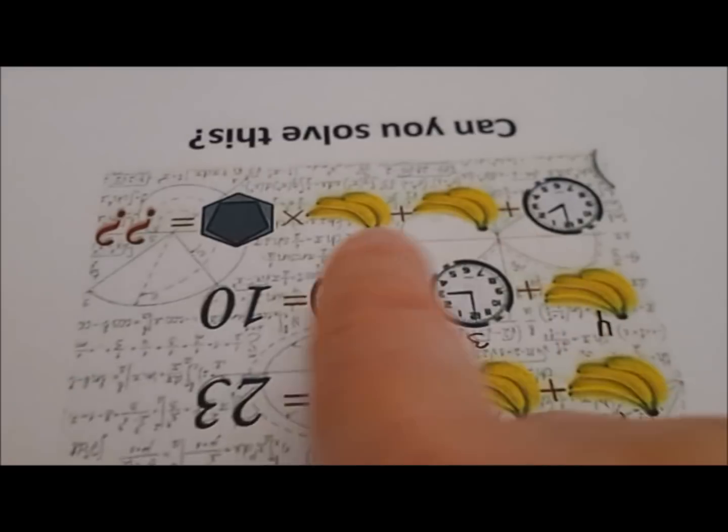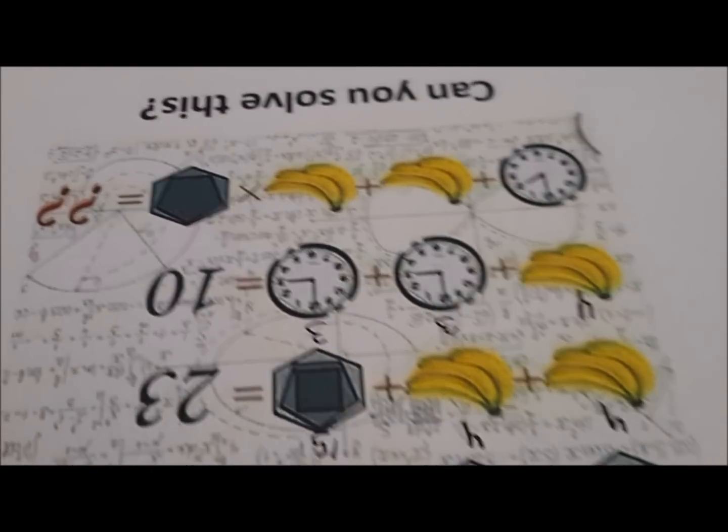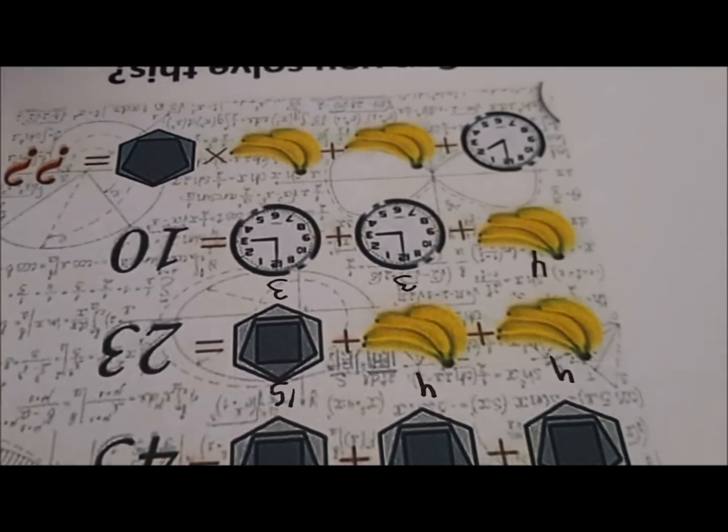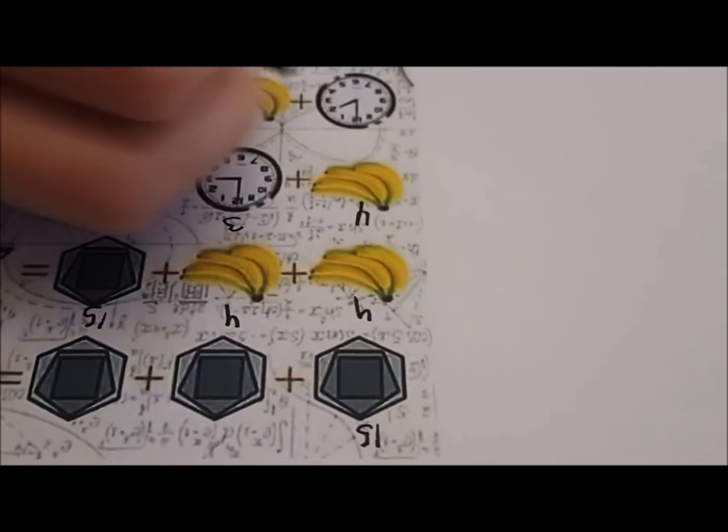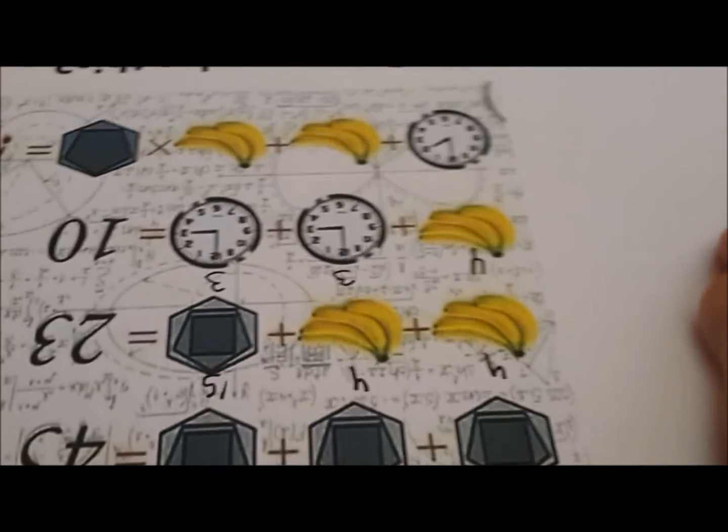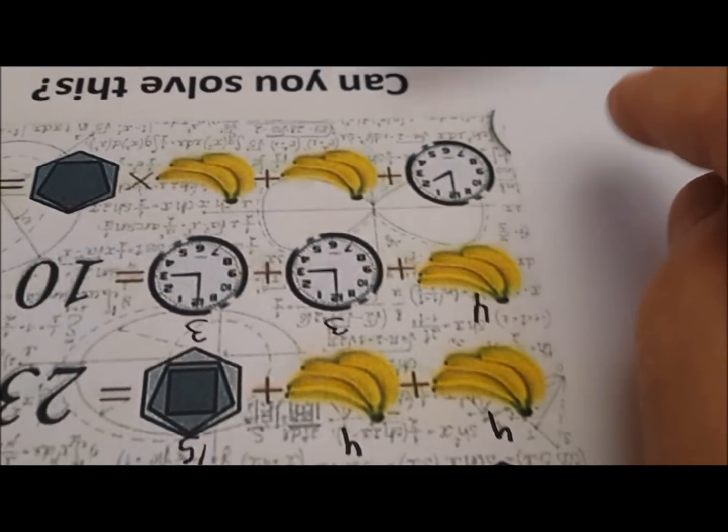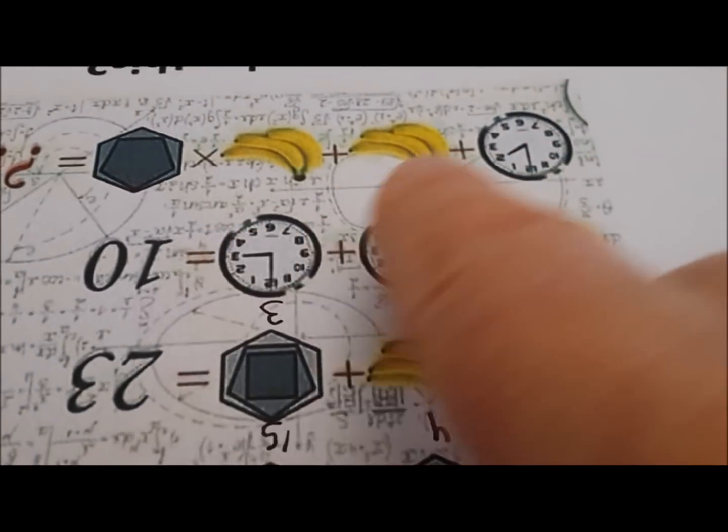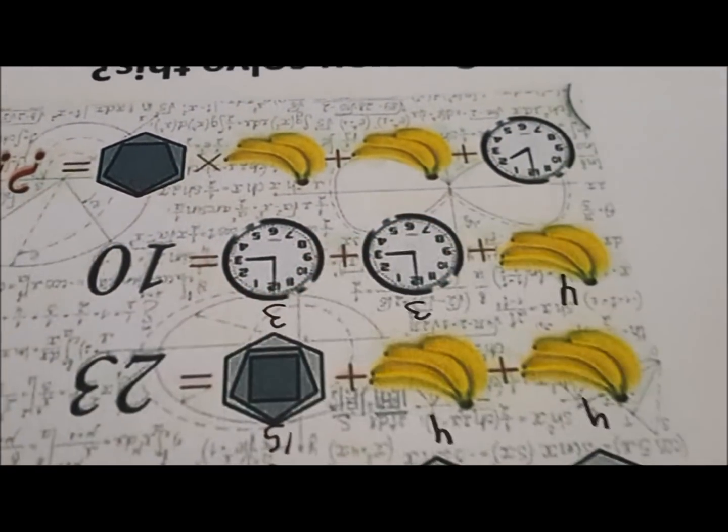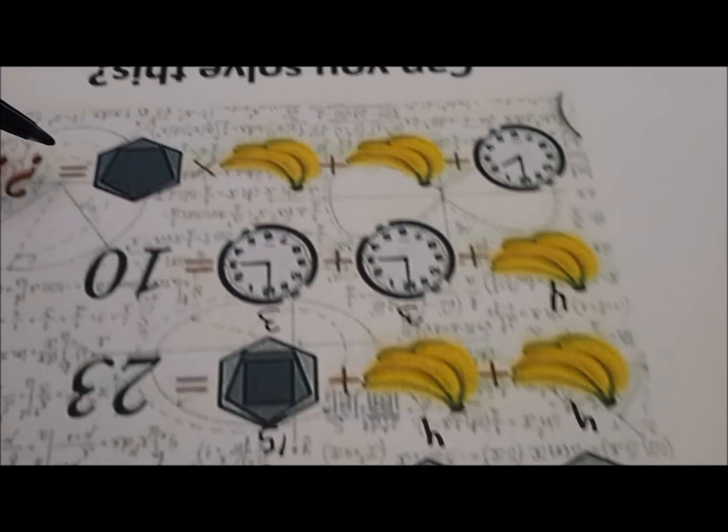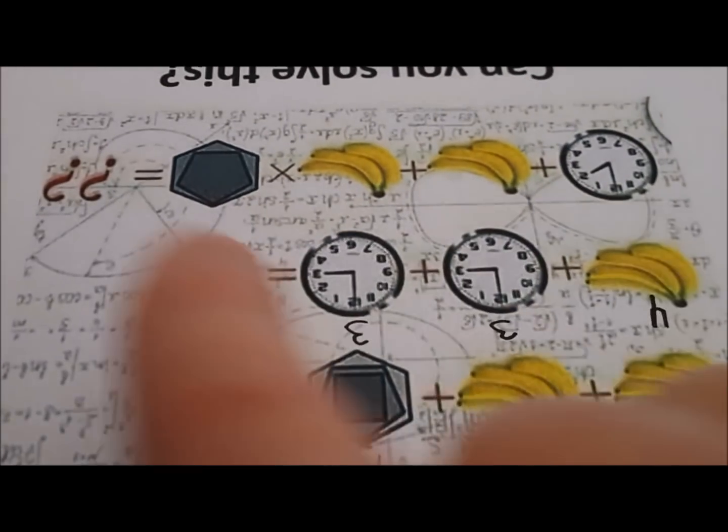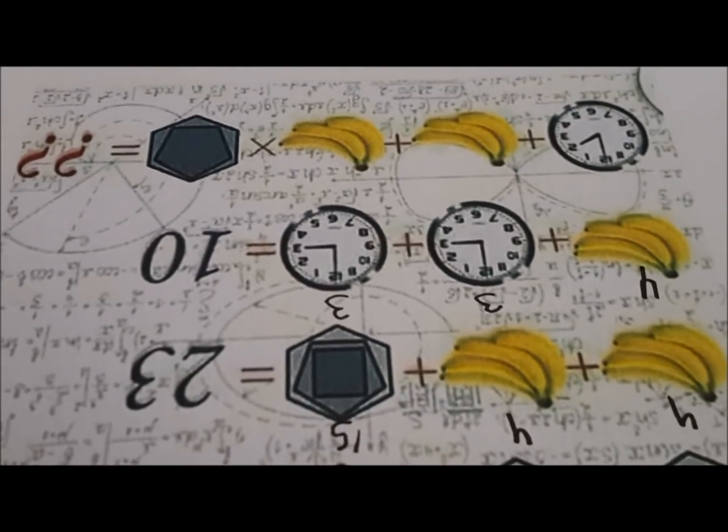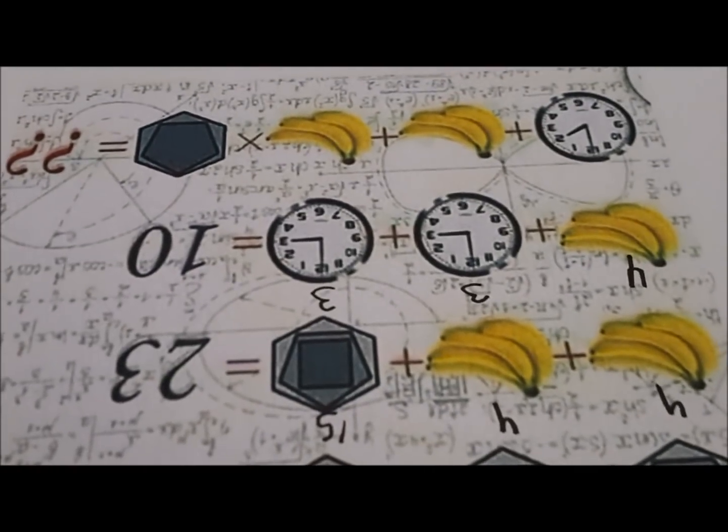Okay, now we need to answer this last line here. We need to answer this last line. Now, how can we do that? Well, first of all, let's go slowly. This isn't the same as the rest of the clocks. Okay, one second. Which one do you want to look at first? The clock, the bananas, or this figure? Which one do you want to look at? This figure.